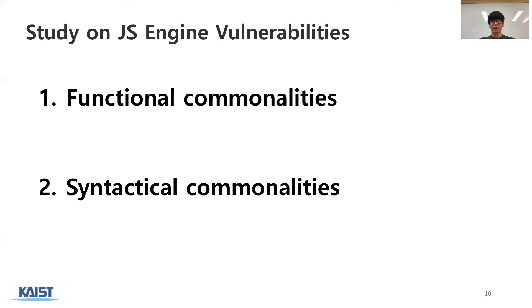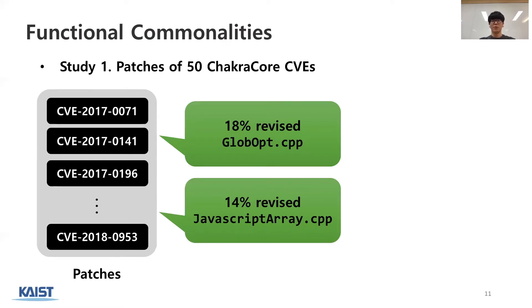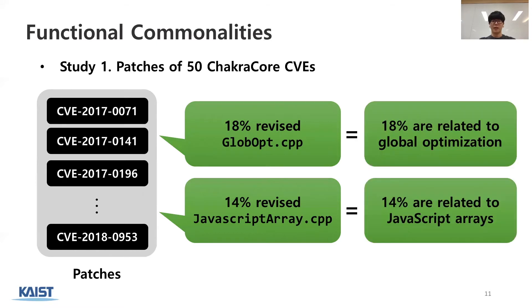To investigate whether such patterns exist in bug triggering JS code, we first analyzed functional and syntactical commonalities in JS engine vulnerabilities. To find functional commonalities, we collected and analyzed patches of 50 ChakraCore CVEs. Among 50 patches, 18% revised globeopt.cpp and 14% revised javascriptarray.cpp file. In other words, 18% of CVEs are related to global optimization and 14% are related to JavaScript arrays.